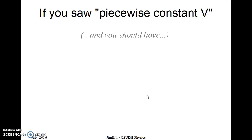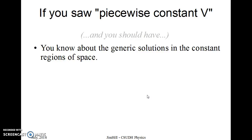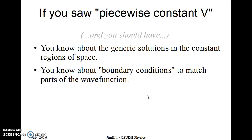If you saw piecewise constant potentials in the previous course, and you really should have run into them, you know about generic solutions of the Schrödinger equation in the constant regions of space. You're either sinusoidal if the energy is greater than the constant potential, or they're exponential, or linear superpositions of exponentials if the energy is less than the constant potentials.